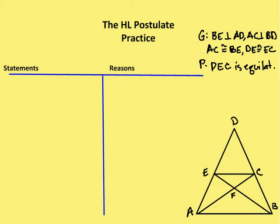The first problem — you can do this on your own. You can pause this after I explain the problem to you, and then go on to see the answer. I have two of these. So given that segment BE is perpendicular to AD, segment AC is perpendicular to BD, AC is congruent to BE, DE is congruent to EC, and we want to prove that DEC is an equilateral triangle.